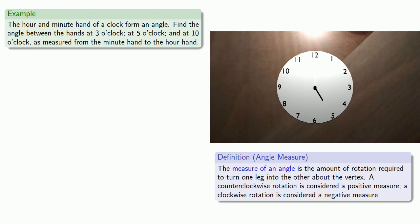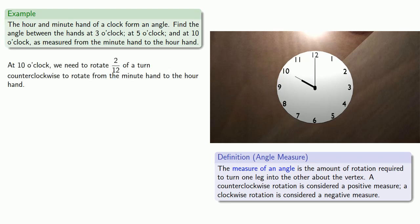So let's go to ten o'clock. Now remember, we're rotating from the minute hand to the hour hand. So that at ten o'clock, we need to rotate two twelfths of a turn counterclockwise to rotate from the minute hand to the hour hand. Since this was a counterclockwise rotation, the angle measure is positive, and this means the angle is two twelfths of a turn.